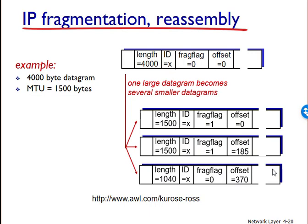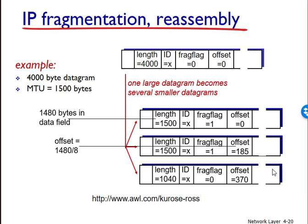Suppose the original datagram is stamped with an identification number of 777. The characteristics of the three fragments are shown in the table. The values reflect the requirement that the payload data in all but the last fragment be divided into multiples of 8 bytes, and that the offset value be specified in units of 8-byte chunks. At the destination, the payload is passed to the transport layer only after the IP layer has fully reconstructed the original datagram. If one or more fragments do not arrive, the incomplete datagram is discarded and not passed to the transport layer.